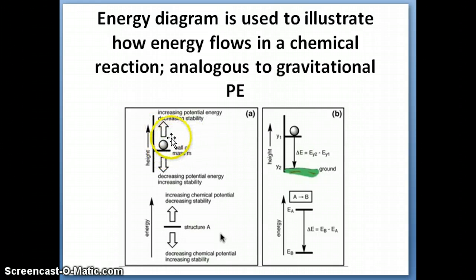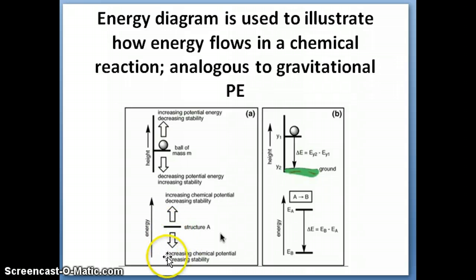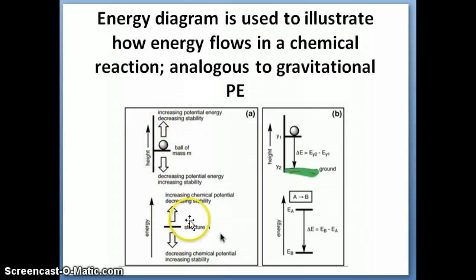In terms of representing chemical reactions, we can do the same thing. Instead of a ball, we have a molecule — molecule A, for example. The closer molecule A is to the bottom of the energy axis, the lower its energy is. The higher its position on the axis, the higher its energy. So it's exactly analogous to the gravitational potential energy axis.